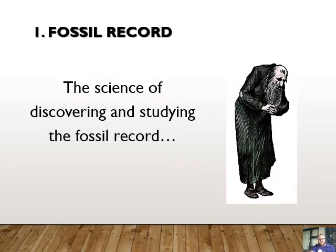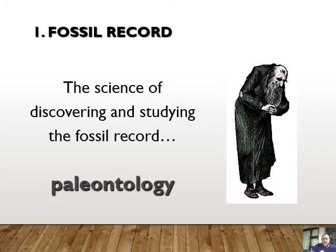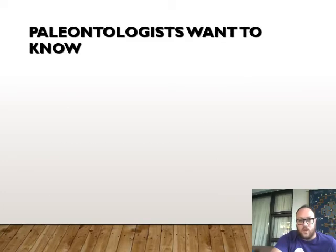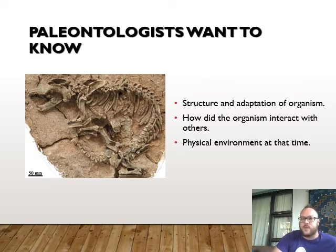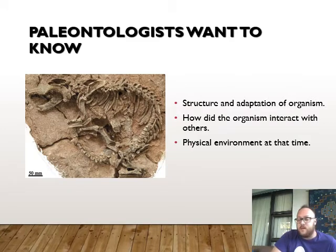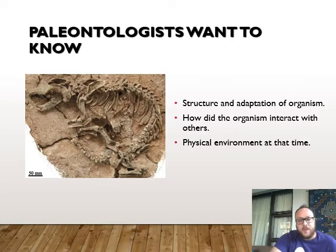The science of discovering and studying the fossil record is called paleontology — you need to know this word. Please don't get paleontology confused with archaeology. Paleontologists are really just studying the fossil record — what appeared when and why. Paleontologists want to know the structure and adaptation of the organism, how the organism interacted with each other and the physical environment at the time. With that knowledge, they can figure out what the environment was actually like. If you find an individual that has lost all its hair, you can guess they lost it for a particular reason.